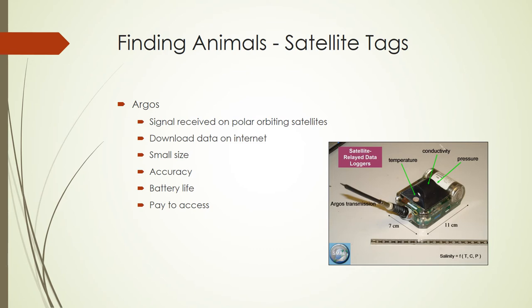There's also the Argos satellite tag system, which uses polar-orbiting satellites to receive signals and relay them to the internet in real time. Satellite tags can be smaller than GPS tags because you don't need a full GPS unit onboard, but their accuracy and battery life are not great. They're also insanely expensive with a monthly access fee for the satellite servers. As with everything in wildlife research, there are tradeoffs, and you need to think carefully about your question and your animal when deciding what tag to use.